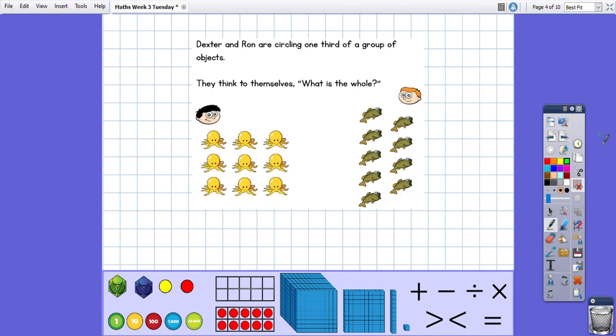Dexter and Ron are circling one third of a group of objects. And they think to themselves, what is the whole? So you need to remember that the whole is the amount that you start with or the whole shape. So to find the whole, we need to count the objects. So for Dexter, he has got octopus. So let's count them. Remember, it's always useful to cross things out as we count.